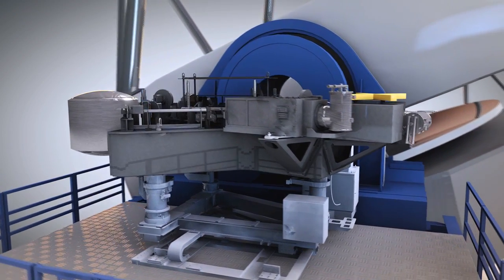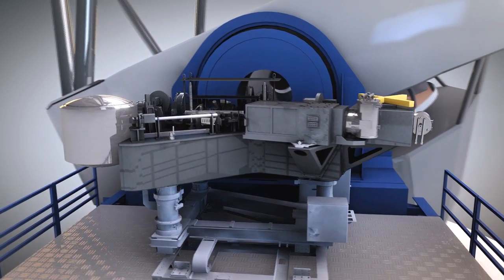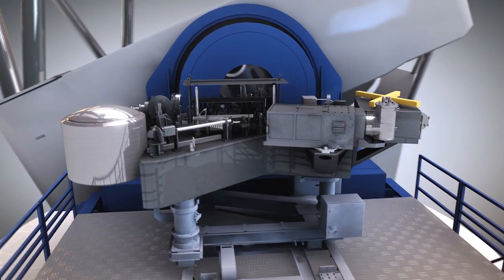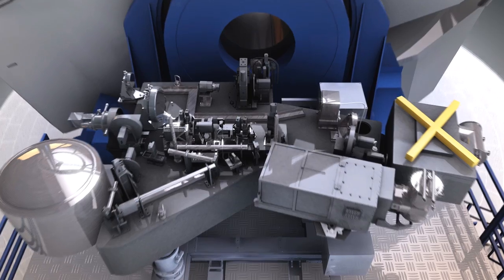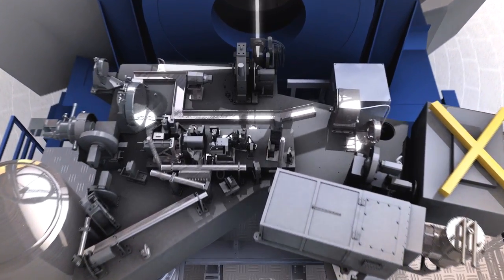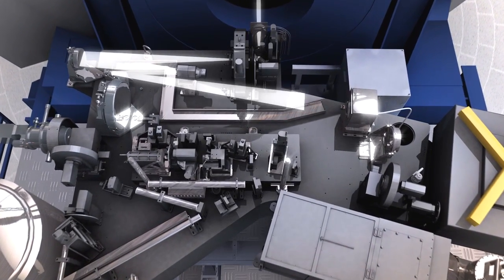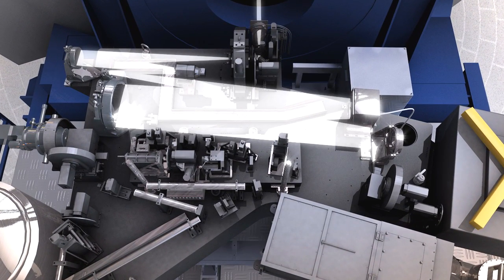SPHERE will take images of exoplanets. It will combine polarimetry with other methods to suppress the overwhelming light from a star, and allow the very feeble light from any planets orbiting that star to be picked up and studied.